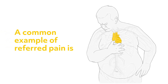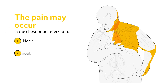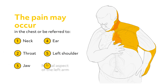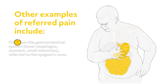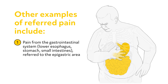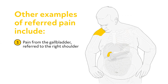A common example of referred pain is that associated with a heart attack. The pain may occur in the chest or be referred to the neck, throat, jaw, ear, left shoulder, and the medial aspect of the left arm. Other examples of referred pain include pain from the gastrointestinal system referred to the epigastric area; pain from the pharynx, such as with a sore throat, referred to the ear; and pain from the gallbladder referred to the right shoulder.